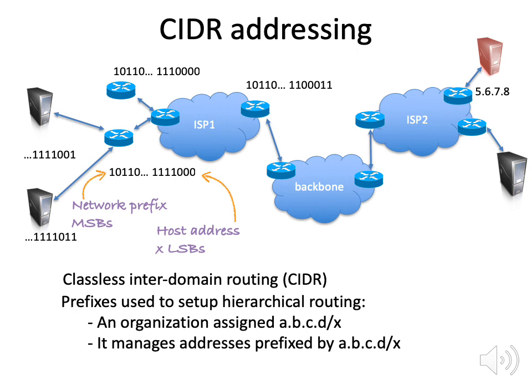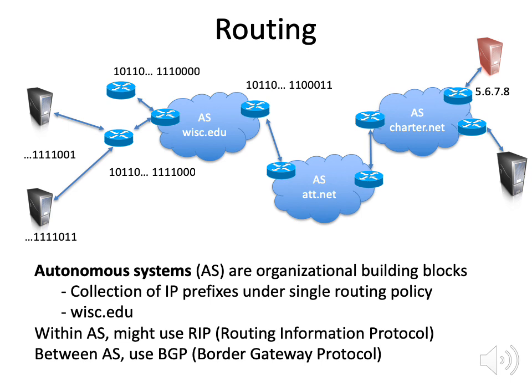Routing works by deciding for some set of addresses — some CIDR prefix — where those packets should be sent. This is classless because we don't specify exactly how many bits we have to use. It's not exactly 8 bits, 16 bits, or 24 bits. It could be 1 bit, 2 bits, 19 bits, or 18 bits. So routing works by deciding for every CIDR block of addresses where they should be sent.